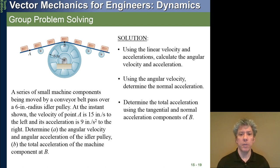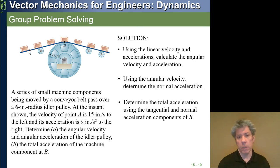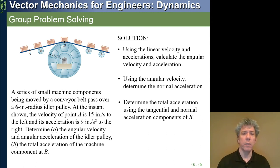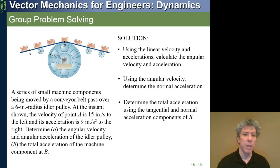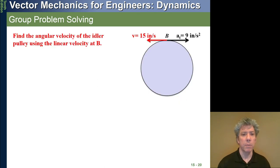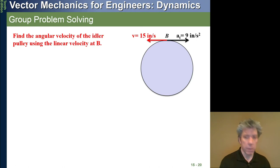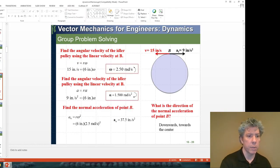Finally, determine the total acceleration using the tangential and normal acceleration components of B. We have the normal acceleration, which is V squared over rho - 15 inches squared over 6 inches - and the tangential piece of 9 inches per second squared. We can take a vector sum of those two and calculate the total acceleration of point B. I'll let you work that out on your own and look through those slides.